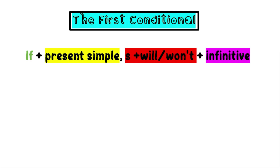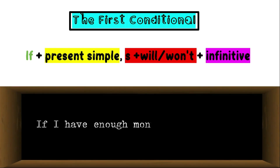In the first conditional, the form is: if plus present simple, then a comma, then subject plus will or won't (in the negative) plus infinitive. For example: if I have enough money, I will buy new shoes. So we have if plus present simple, then a comma, then the future will and then the base form, which is the infinitive. And this is the first conditional.